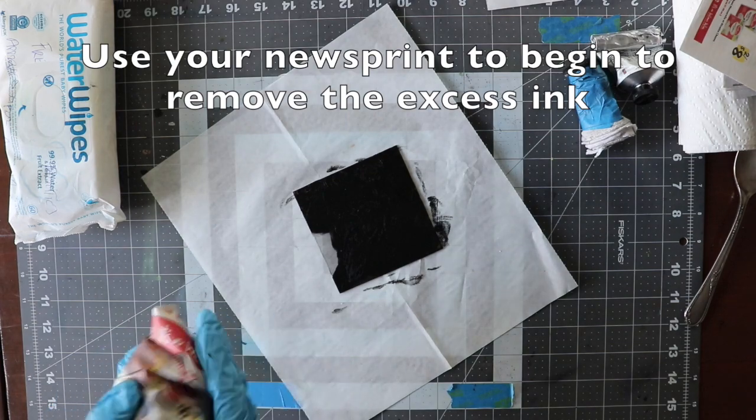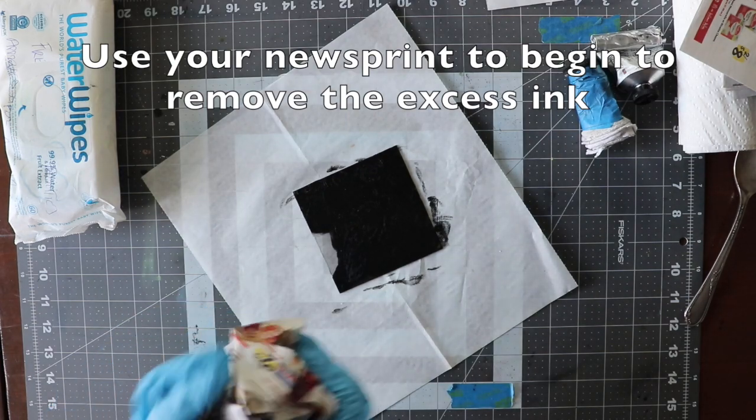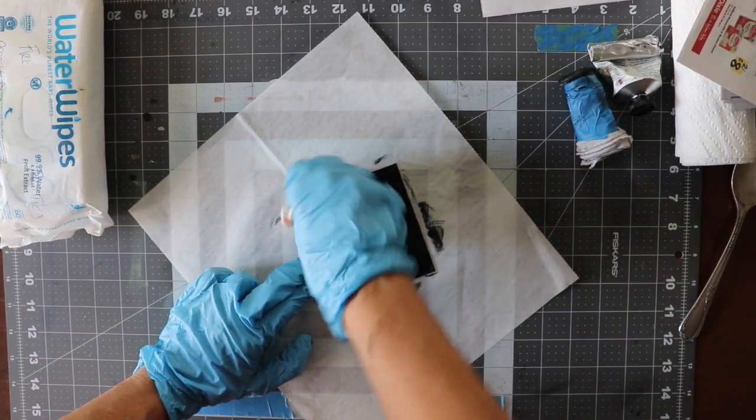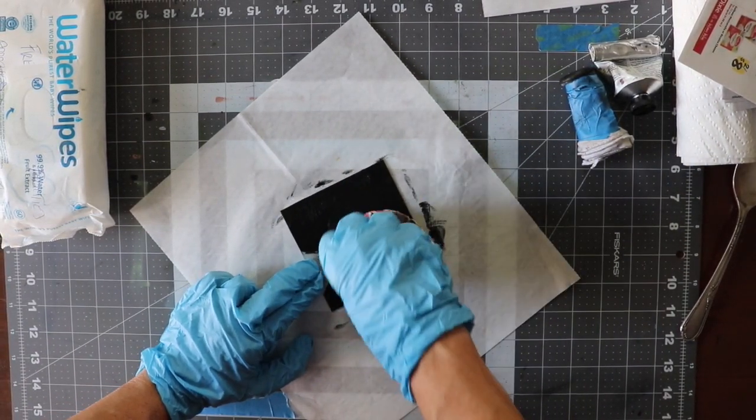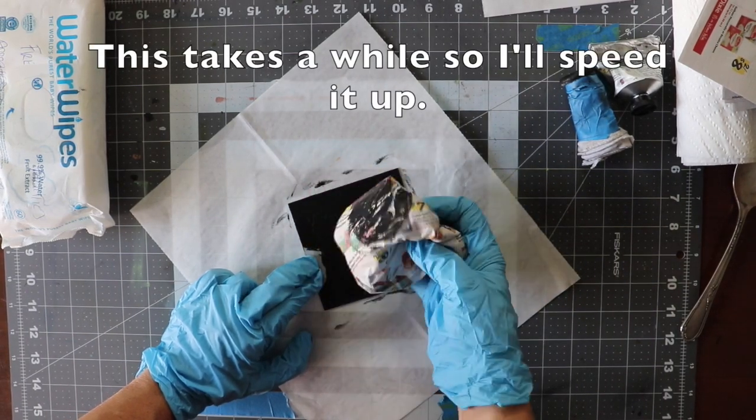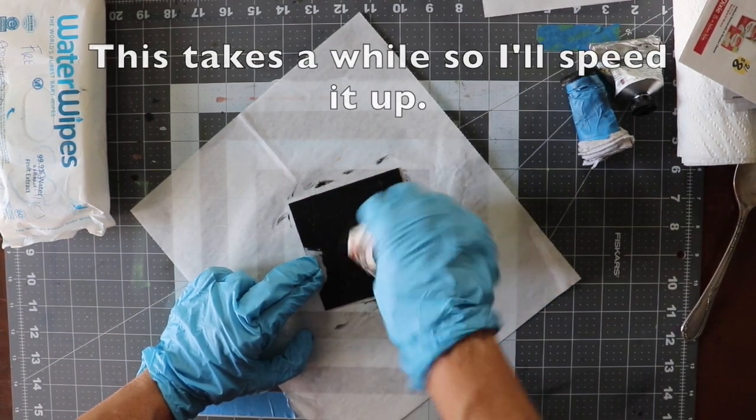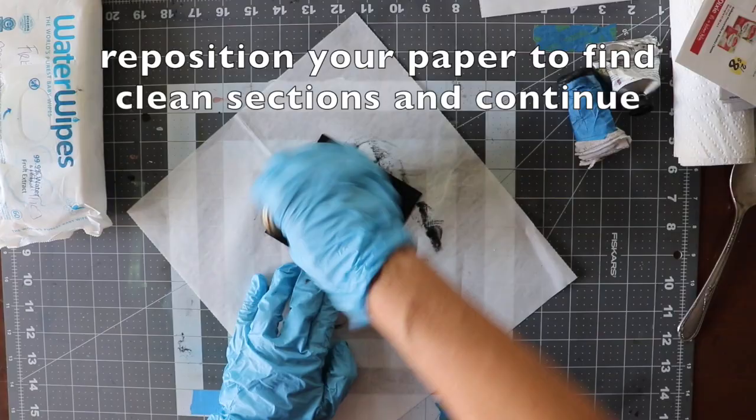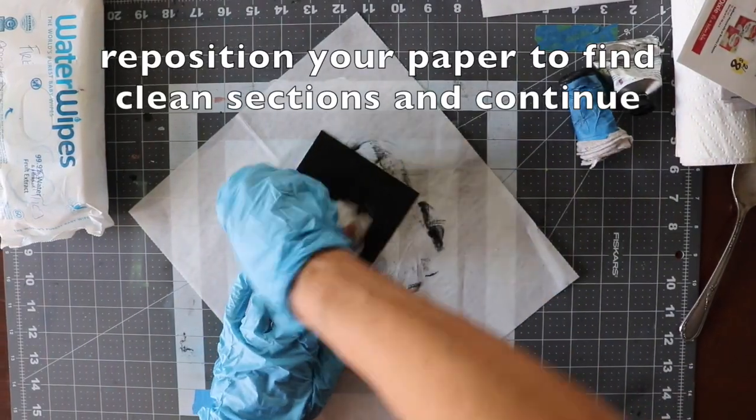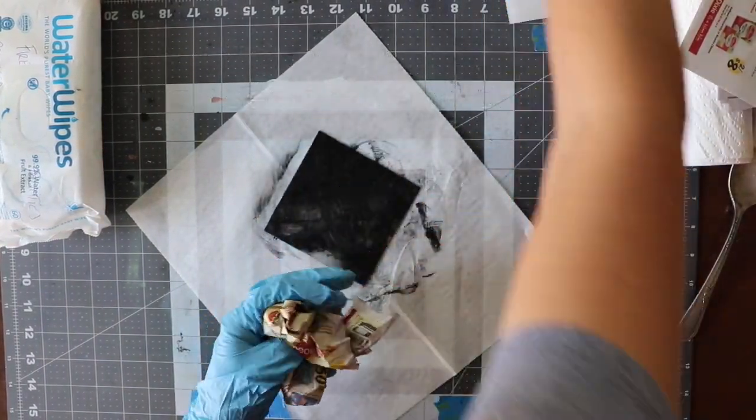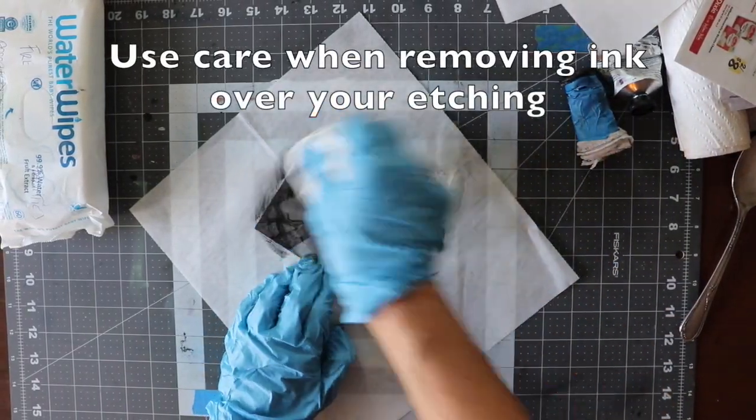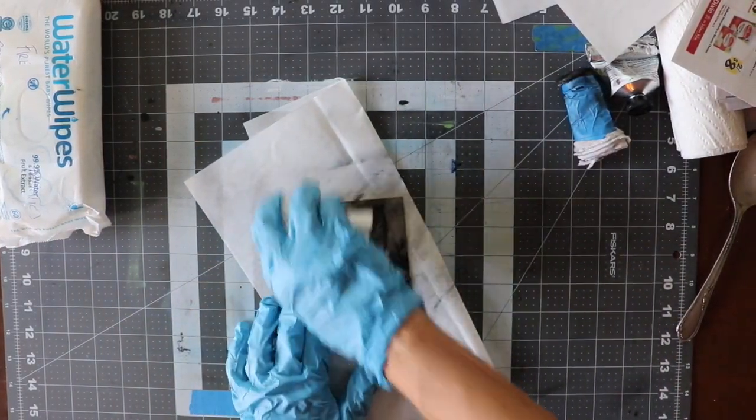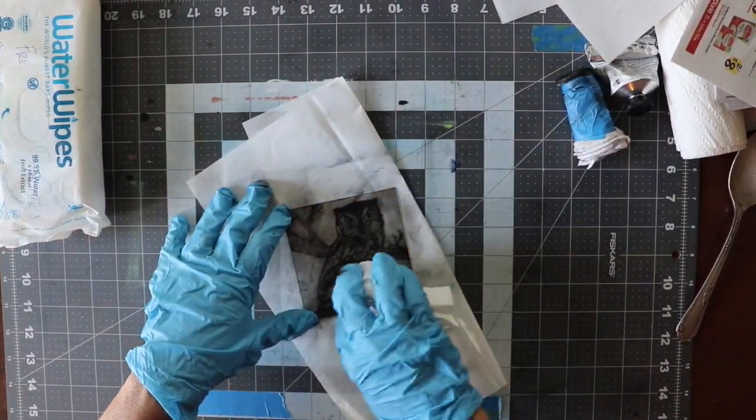I form my newsprint into a ball to begin removing the excess ink. Once again, I use a twisting motion. This pushes the ink into the lines while removing ink from the surface. Reposition your paper to find clean sections and continue removing the ink. Use care when removing the ink over your etched area. Using more pressure in the areas you want with less ink, such as the surrounding areas.